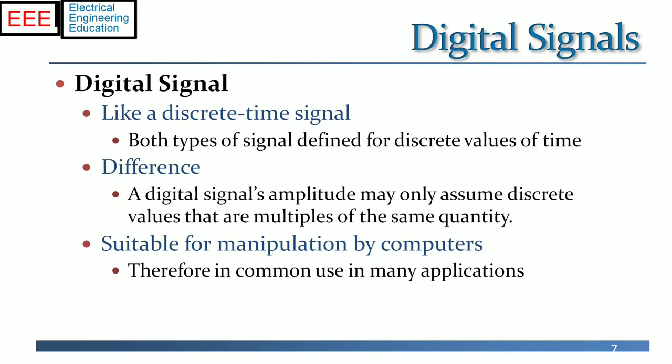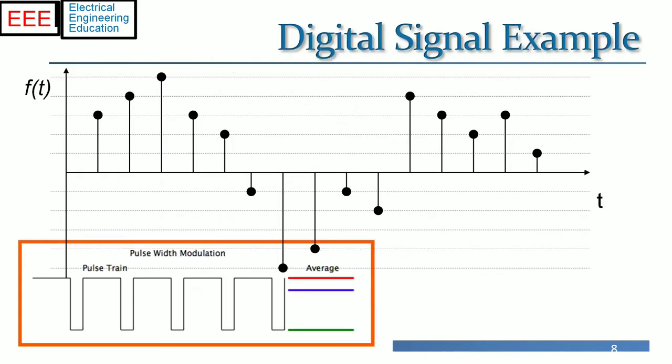A digital signal is like a discrete time signal in that both types of signal are defined for discrete values of time. The difference is that a digital signal's amplitude may only assume discrete values that are multiples of the same quantity. This kind of signal is suitable for manipulation by computers and is therefore in common use in many applications.